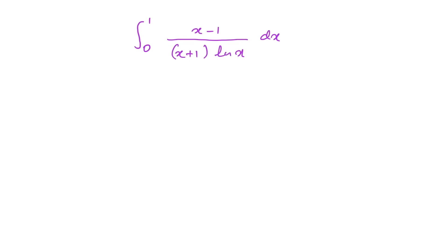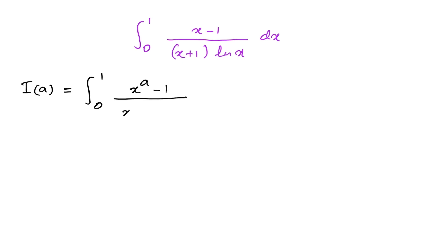I am going to use the Feynman technique of integration. Therefore I am going to define an integral I(a) equal to the integral from 0 to 1 of (x to the a minus 1) over (x plus 1) times the natural log of x dx. Then we are going to differentiate with respect to a.